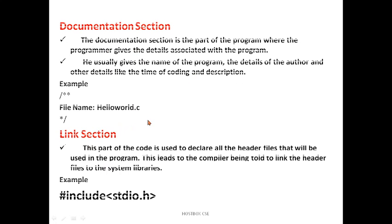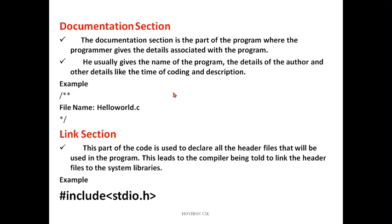Let's see each one with examples. The documentation section is the part of the program where the programmer gives details associated with the program — the name of the program, the details of the author, and other details like the file name. It starts with a slash-asterisk symbol and closes with an asterisk-slash. You can write the file name, the purpose of the program — for example, hello.c or addition.c. This documentation section is not mandatory; if you want, you can mention it with these comments, otherwise it is not required.